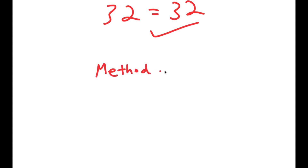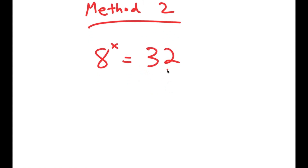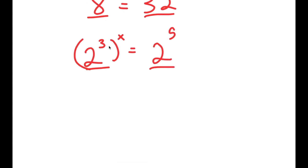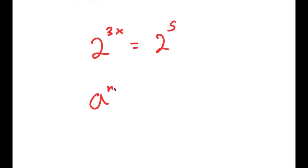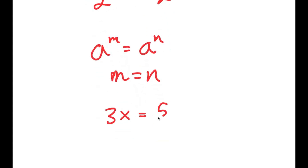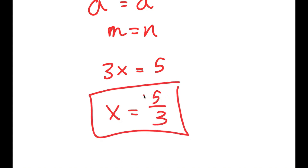Now I also have a second method of solving this problem. For the second method, we have the same equation, 8 to the power of x is equal to 32, and this is a simpler method. I'm going to start by rewriting these two numbers: 8 as 2 to the power of 3, and 32 as 2 to the power of 5 — rewriting both as the same base, which makes it much easier to solve. So 2 to the power of 3x equals 2 to the power of 5. Because these two have the same base, m must equal n, so 3x is equal to 5, and x is equal to 5 over 3.